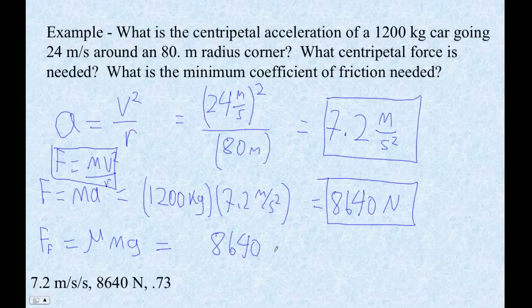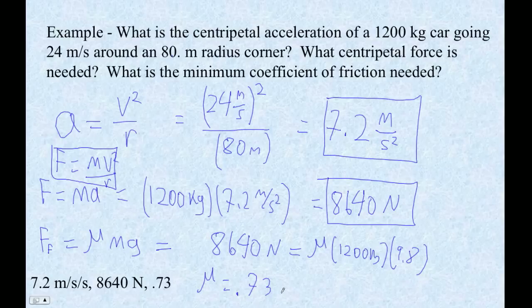So 8640 newtons equals mu, which we don't know, times mass, which is 1200 kilograms, times g which is 9.8. So mu times m times g. So I'm going to do 8640 divided by 1200 divided by 9.8, and I get mu is equal to 0.73469 or something like that. So about 0.73. So here are our answers.